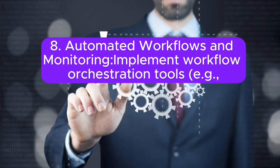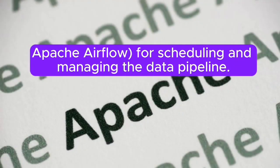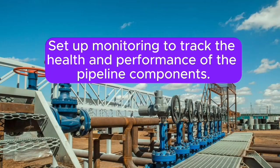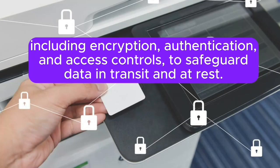8. Automated workflows and monitoring: implement workflow orchestration tools, for example Apache Airflow, for scheduling and managing the data pipeline. Set up monitoring to track the health and performance of the pipeline components. 9. Security and access control: implement security measures including encryption, authentication, and access controls to safeguard data in transit and at rest.